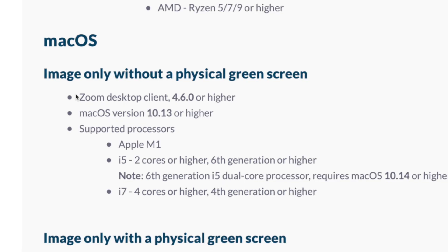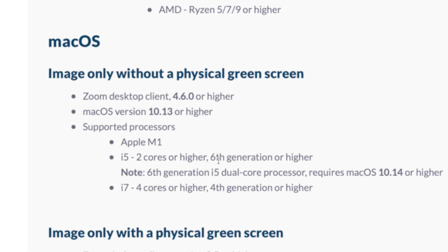If you look at Mac OS, without a physical green screen, your Mac version should be at least 10.13, and this supports the Apple M1 chip, which is the latest chip from Apple. The minimum is a Core i5 2-core or higher, sixth generation or higher. So if you are using older devices, you are not able to use the virtual background without a physical green screen. In this video, I'm gonna show you exactly how you can use virtual background with any type of PC.